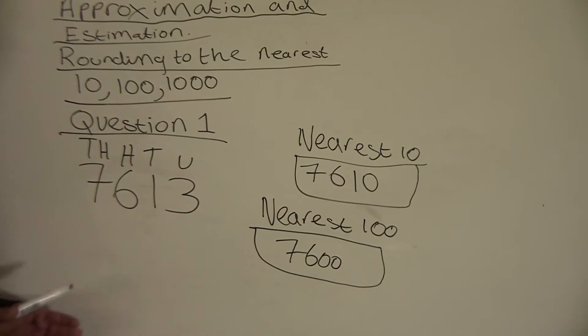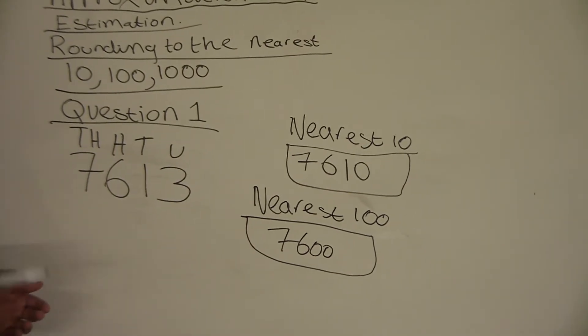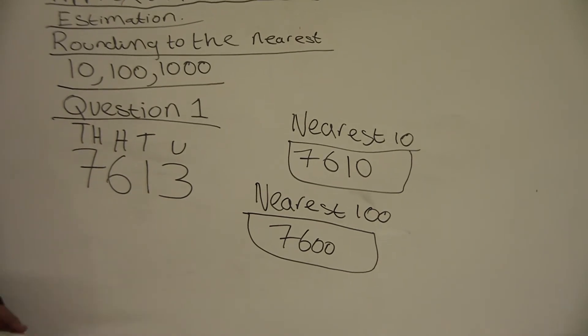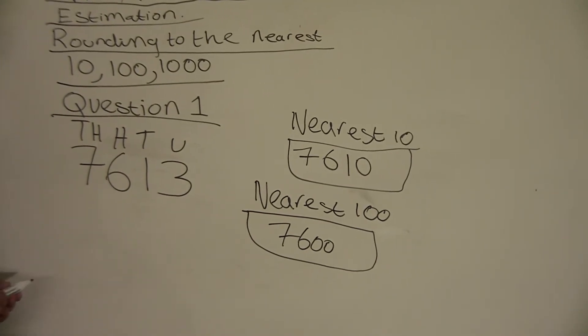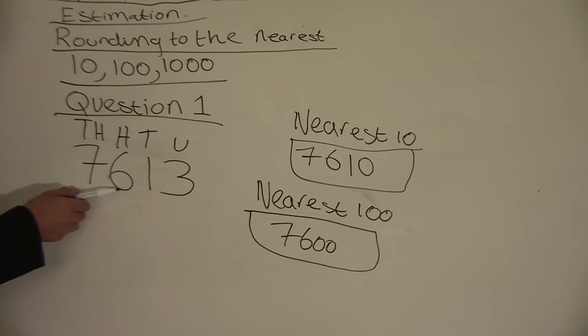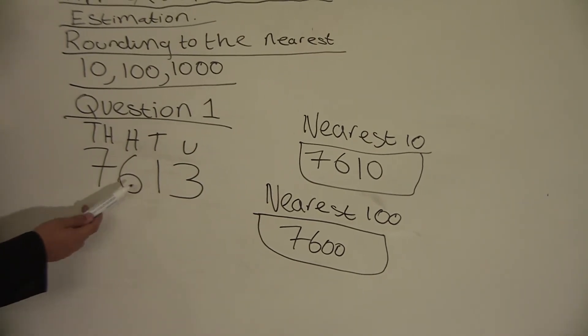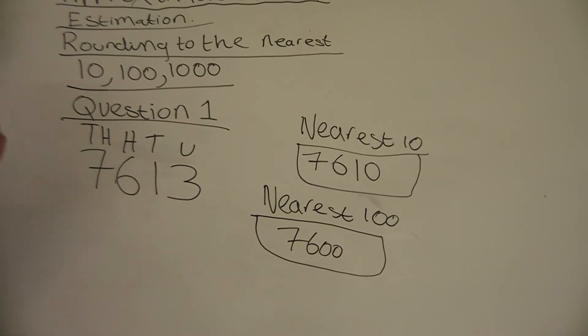Same rule applies. If it is above five, we round up. Here it is above five, so we will round up.